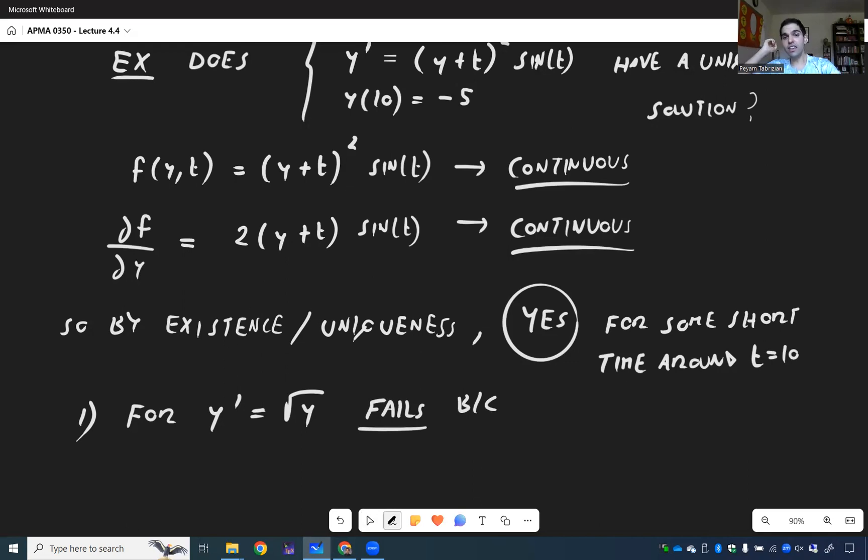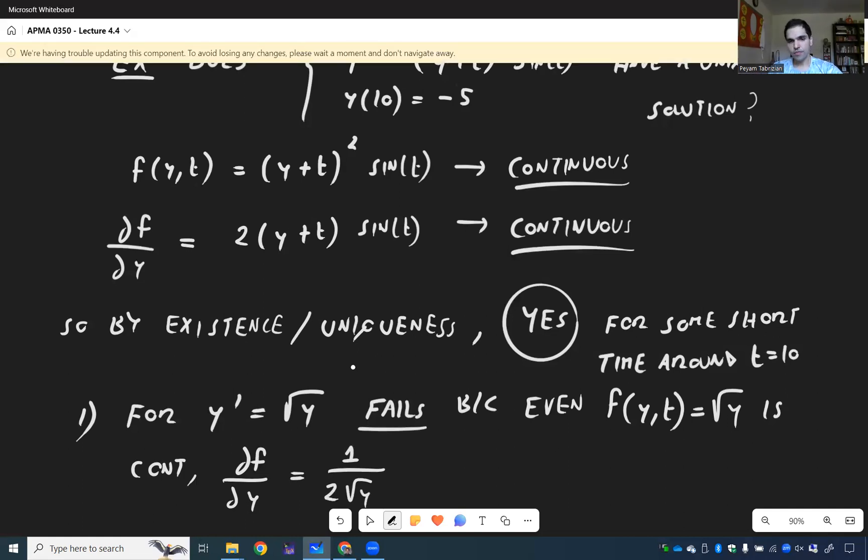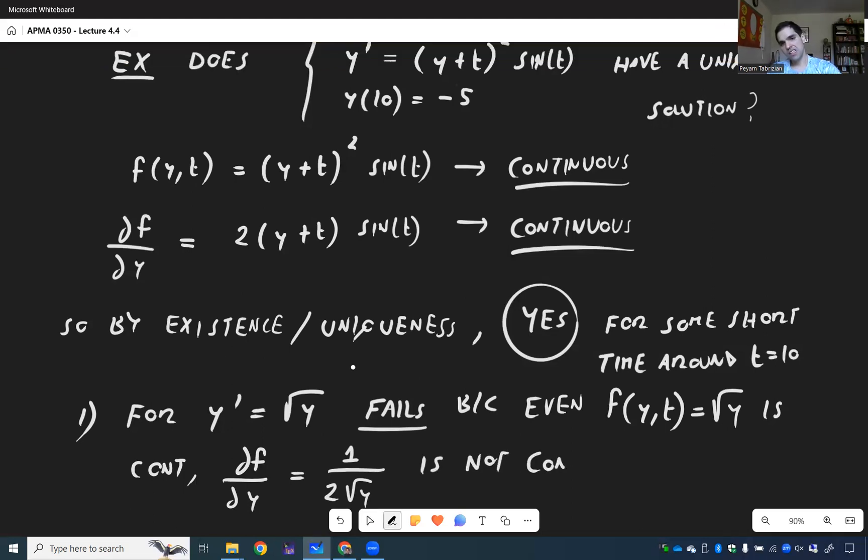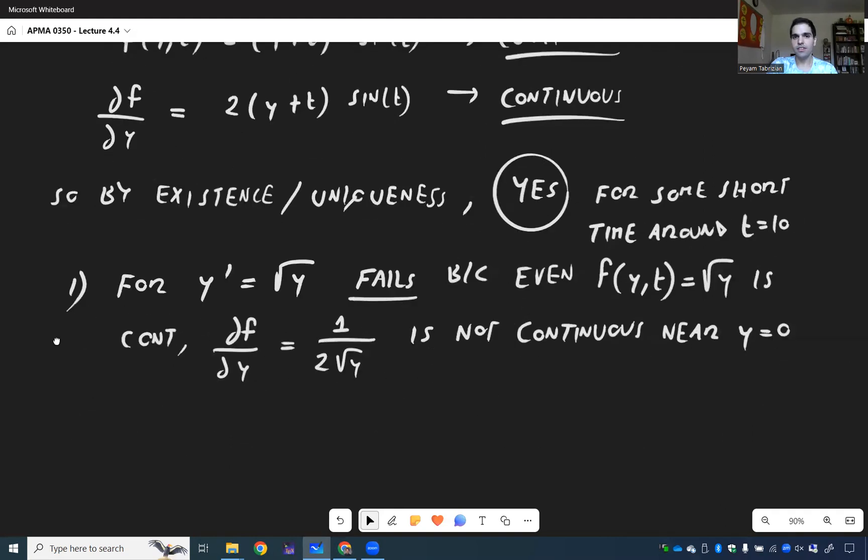Well, the theorem fails because, and that's quite interesting, even though our function is continuous, the partial derivative is not. So ∂f/∂y is 1 over 2√y. It blows up at the initial condition. It's not continuous near y equals 0. Because remember, we assume y of 0 equals 0 here. So that's one thing, because the partial derivative blows up. We don't necessarily have a unique solution, which we've seen.